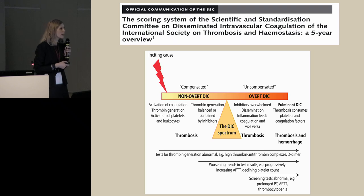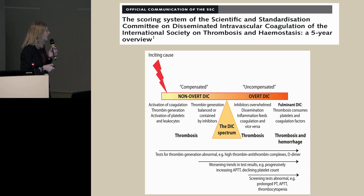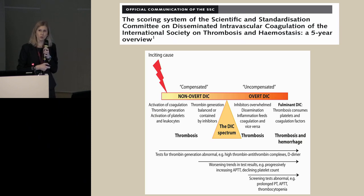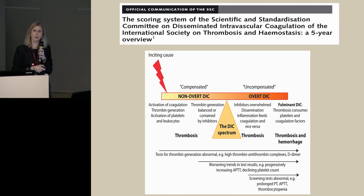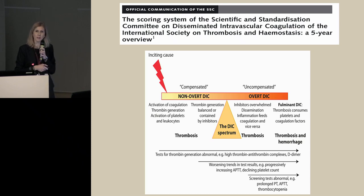According to the ISTH, we have two major types of DIC: non-overt DIC and overt DIC. Non-overt DIC means we have activation of coagulation but no clinical manifestations of bleeding or thrombosis — a stressed but still compensated hemostatic system. We don't see any modification in standard coagulation tests or ROTEM. It is the pre-DIC, asymptomatic type.